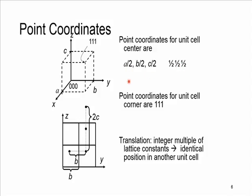The point coordinate for the center is one-half, one-half, one-half. In a similar manner, the point coordinate for the far corner of the unit cell is 1, 1, 1. If we start from a point in one unit cell and move an integer multiple of the lattice constants, we reach an identical point in another unit cell — for example, moving one b to the right, or one unit in the negative y-direction, or two c units along the z-axis.